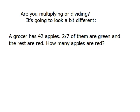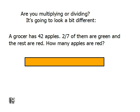Now, if you're multiplying or dividing, it's going to look a little bit different. We have a grocer who has 42 apples. Two-sevenths of them are green and the rest are red. How many apples are red? It's really a one-step problem, so I'm just going to need one bar to represent the 42 apples. Since I'm working with a fraction with a denominator of 7, I'm going to divide the bar into 7 as equal parts as I possibly can.